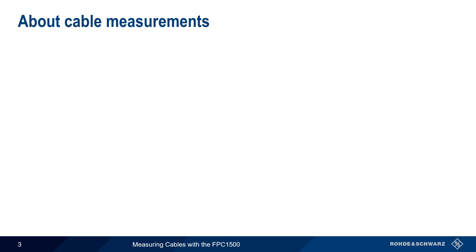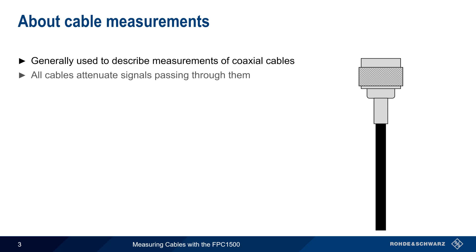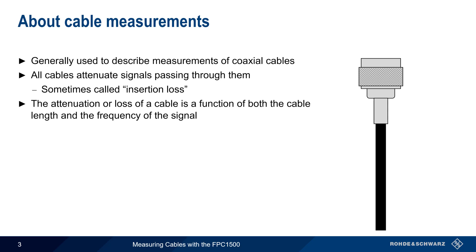We'll start with a brief review of cable measurements. This term is commonly used to describe measurement of connectorized coaxial cables, and this will be the focus of our presentation. All cables attenuate or reduce the power of signals passing through them, and this cable loss is sometimes also referred to as insertion loss. The amount of attenuation is a function of two things – the length of the cable and the frequency of the signal passing through it. Loss almost always increases linearly with length. If we double the length of a cable, the loss is also doubled.